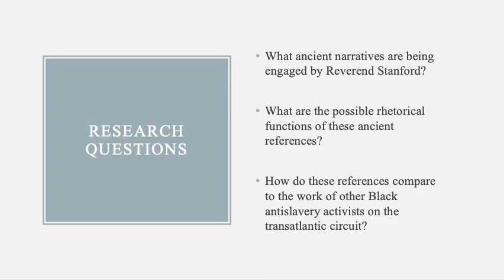To guide this examination, I'm asking these main questions: What ancient narratives are being engaged by Reverend Stanford? What are the possible rhetorical functions of these ancient references? How do these references compare to the writings of other black anti-slavery activists on the transatlantic circuit? I hope that by exploring these questions we can learn more about the textured and rich content of persuasive speeches by black authors through the centuries.